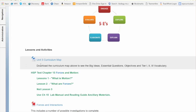As always, take a look at your unit curriculum map. It will give you big ideas, essential questions, your objectives, and your Tier 1, 2, and 3 vocabulary.